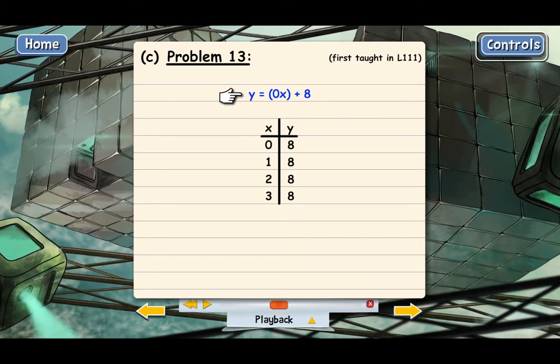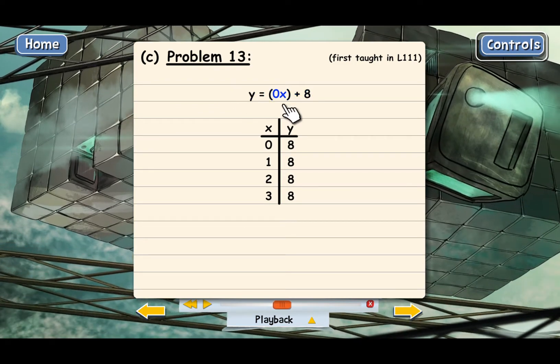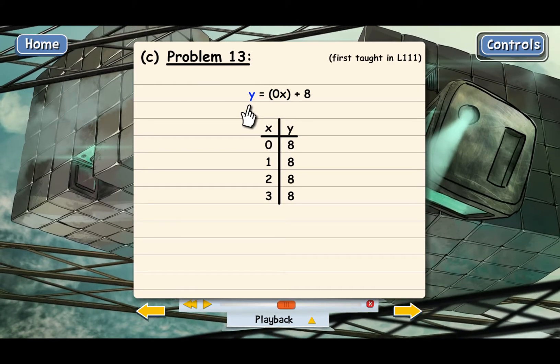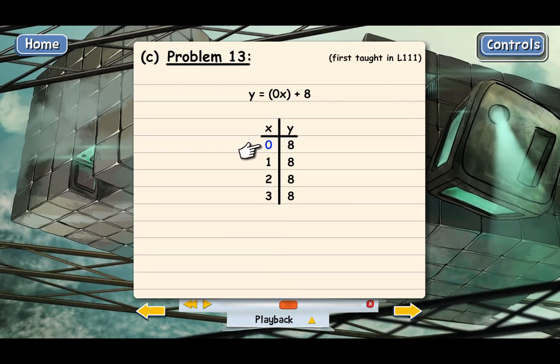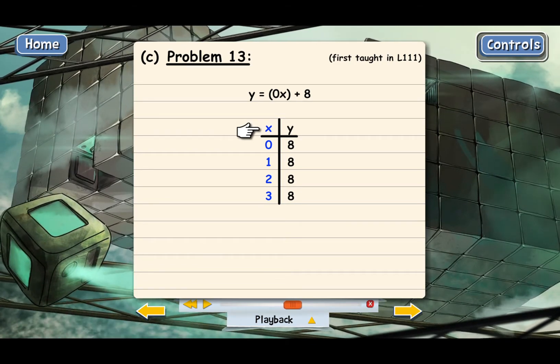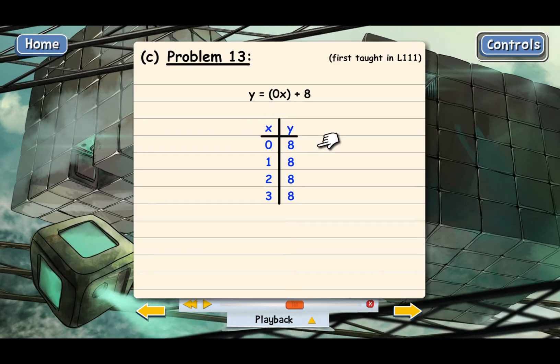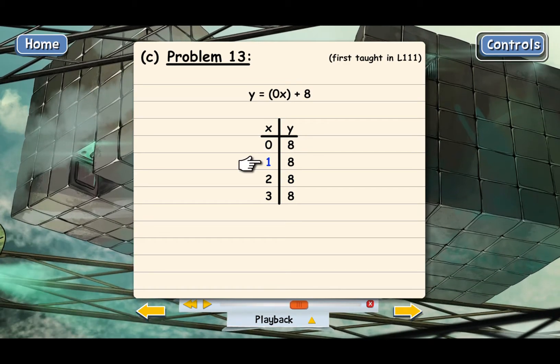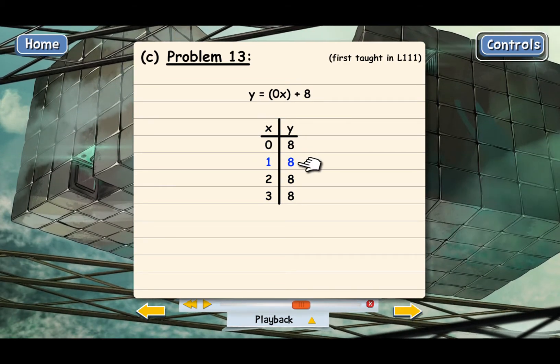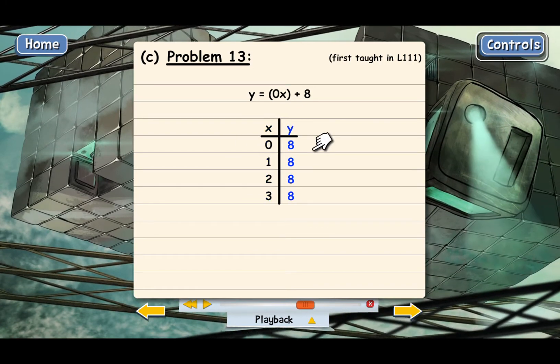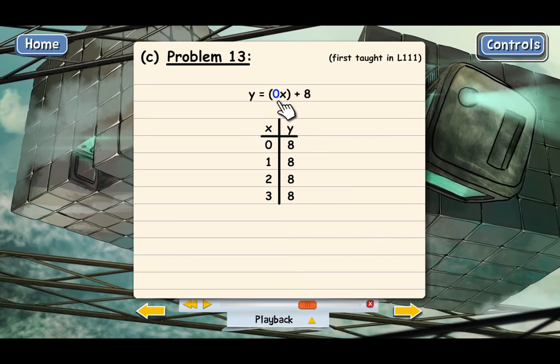Here we have the equation. Notice we've added in the 0x so that you can calculate the values for y. We've plugged in the numbers 0 through 3 for the x values and then come up with the matching y values. When we plug in 0 for x, that gives us 8. When we plug in 1 for x, that gives us 8. No matter which number we plug in for x, we always get 8 for y because the coefficient of x is 0.